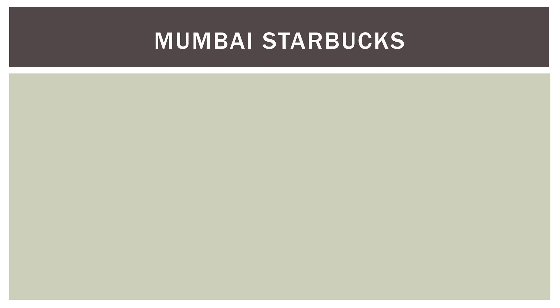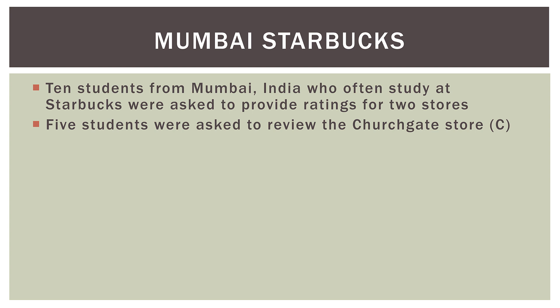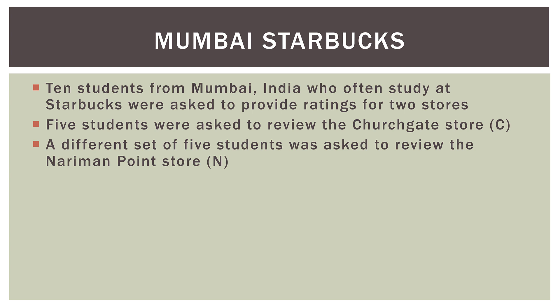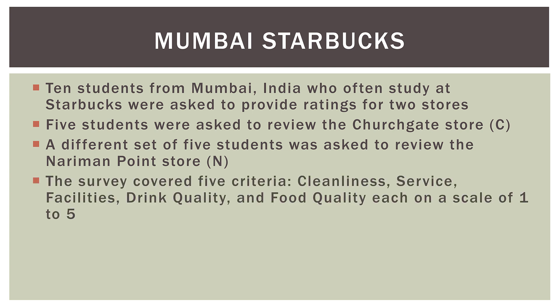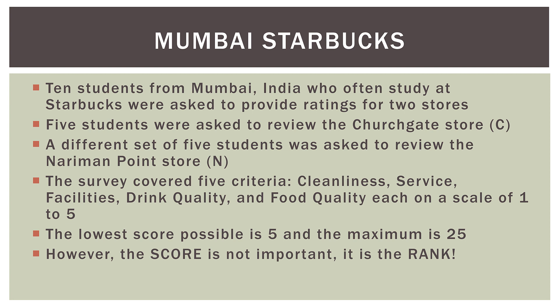Let's look at an example without running the numbers — we'll do that in the next video. We'll call it the Mumbai Starbucks problem. Ten students from Mumbai, India who often study at Starbucks were asked to provide ratings for two stores. Five students reviewed the Churchgate store (denoted C), and a different set of five reviewed the Natterman Point store (denoted N). The survey covered five criteria — cleanliness, service, facilities, drink quality, and food quality — each on a scale of one to five. So the lowest possible score is five and the maximum is 25. However, what we're looking for is the rank — we're going to compare the ranks of the scores.